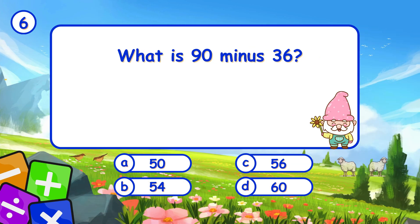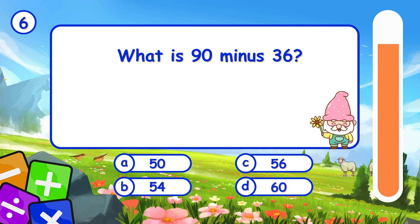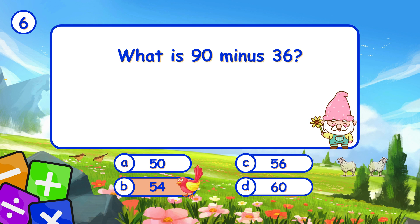What is 90 minus 36? It's B, 54. Subtracting 36 from 90 gives 54.